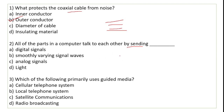Now, all of the parts in a computer talk to each other by sending — computers ke jo bhi parts hote hain, keyboard, processor, mouse — ye ek doosre ko digital form mein signals send karte hain. Digital signals aapko pata hain — discontinuous signals.